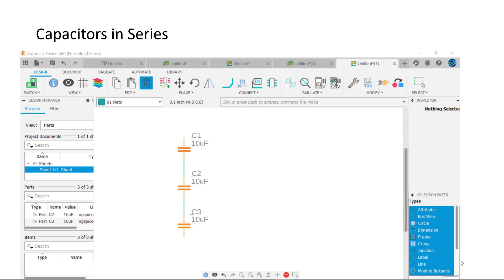Capacitors in series add as reciprocals. 1 over C total equals 1 over C1 plus 1 over C2 plus 1 over C3 and so on. Similar to resistances in parallel, we can rewrite the formula as Ct equals 1 over 1 over C1 plus 1 over C2 plus 1 over C3 and so on. These three capacitors in series equal 3.3 microfarads.